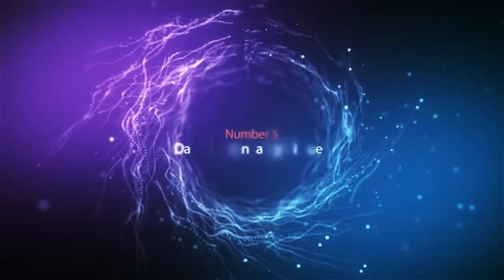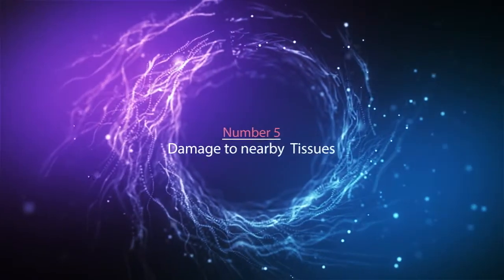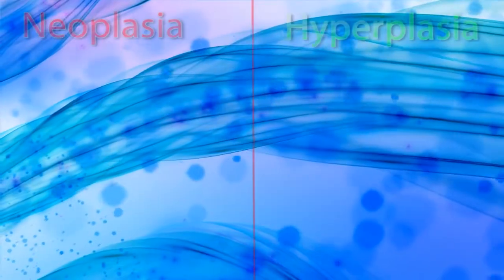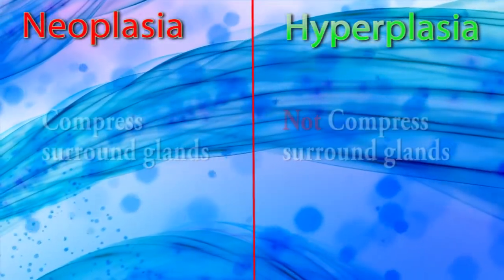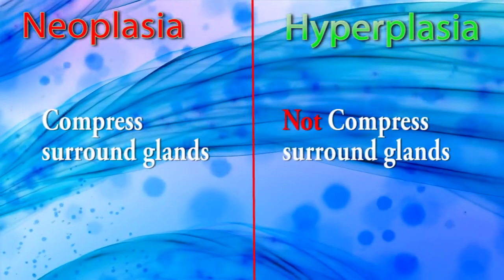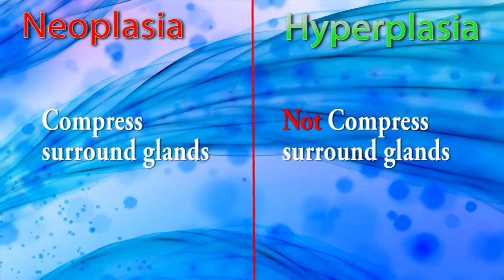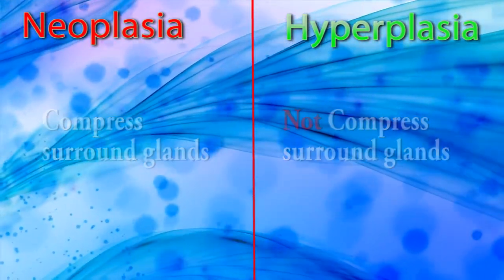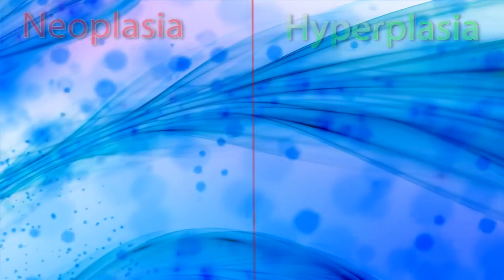Difference number five: damage to nearby tissues. Neoplasia compresses surrounding glands, but hyperplasia does not compress surrounding glands.